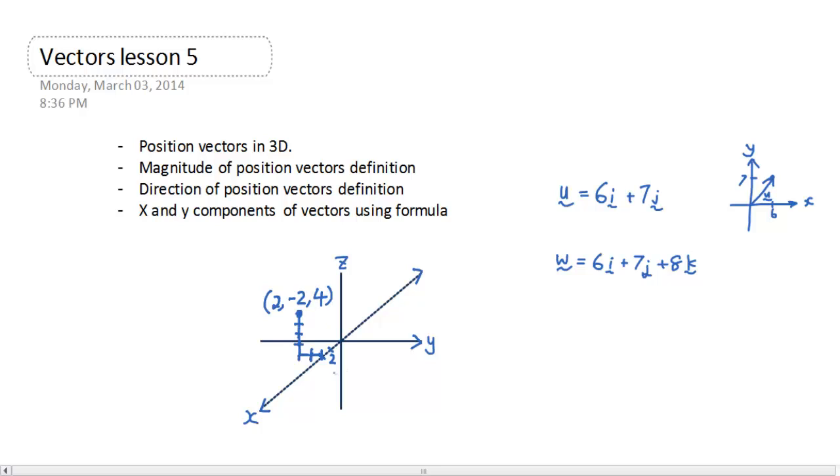Okay, so therefore, the vector connecting this point from the origin, okay, this vector here, let's call that vector m. Vector m, therefore, has the position vector 2i minus 2j plus 4k.